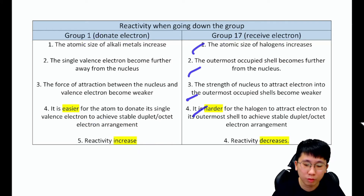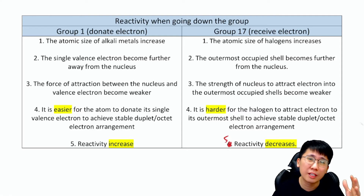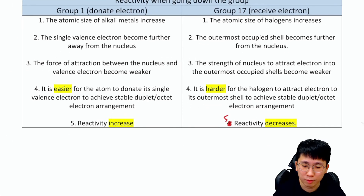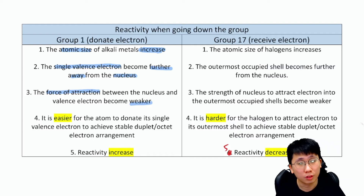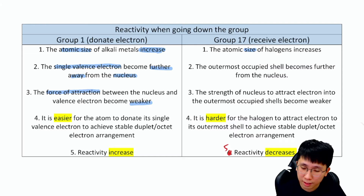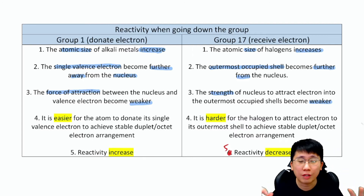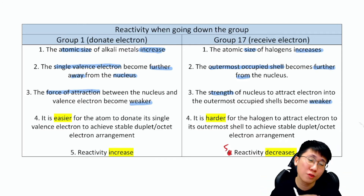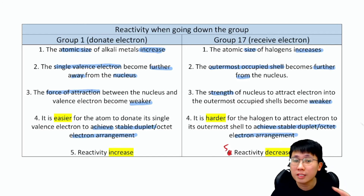This question is typically worth three to five marks in Paper 2. The keywords to include are: atomic size increases; single valence electron becomes further away from the nucleus; force of attraction between nucleus and valence electron becomes weaker; easier to donate electron (Group 1). For Group 17: outermost occupied shell becomes further away from the nucleus; strength to attract electron becomes weaker; harder to attract electron. Always include the goal — to achieve a stable octet or duplet electron arrangement.